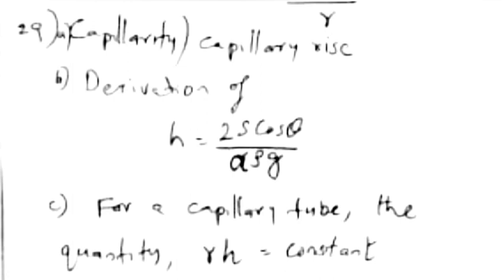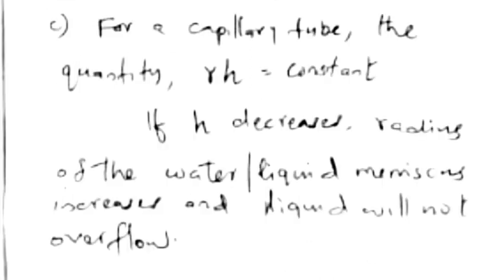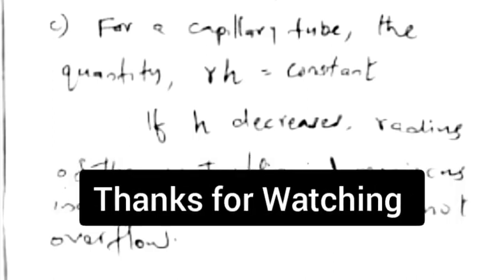Answer: (a) Capillarity or capillary rise. (b) Derivation of h equals 2S cos theta by rho times rg. (c) For a capillary tube, the quantity hr equals constant. If h decreases, radius of the water meniscus increases and liquid will not overflow.